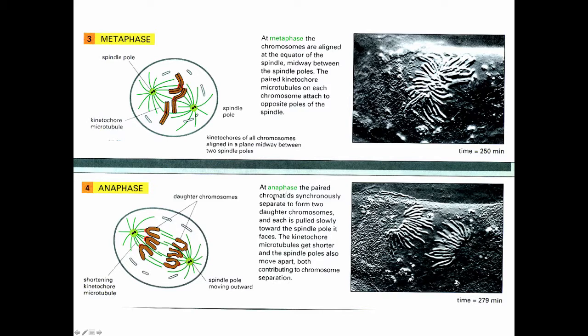At anaphase, the paired chromatids are synchronously separated. Each is pulled slowly towards the spindle pole that it faces. The kinetochore microtubules get shorter and the spindle poles are also pushed apart, so pulling of the chromosomes and pushing the spindle poles apart both contribute to chromosome separation.